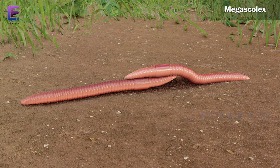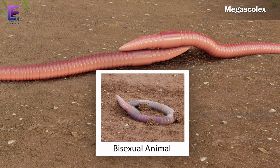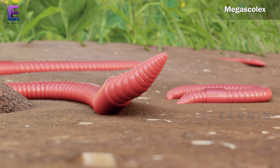Earthworms are bisexual creatures. They usually undergo sexual reproduction. In bisexual organisms, embryonic development is direct. In unisexual organisms, it is indirect.